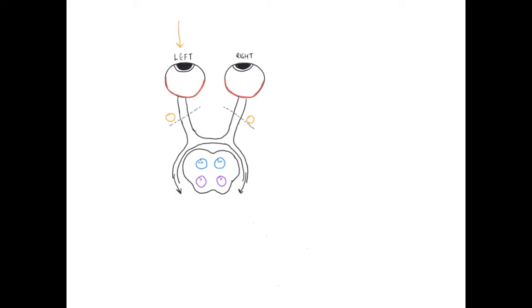If we shine a light into the left pupil, that signal is sensed by photoreceptors within the retinal layer and carried through the optic nerve. While much sensory information is ultimately relayed via the optic tracts to the occipital lobe, we'll focus on what happens with the light stimulus in relation to the midbrain. The sensory afferents run into the brainstem and connect with a nucleus known as the pre-tectal nucleus.